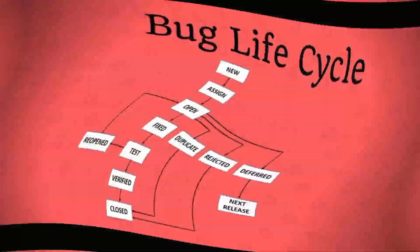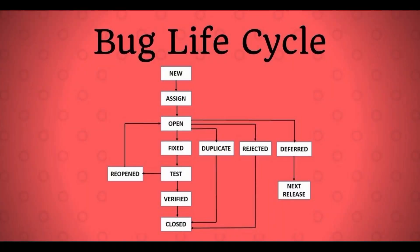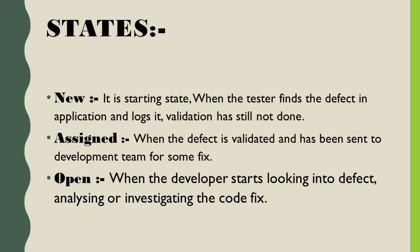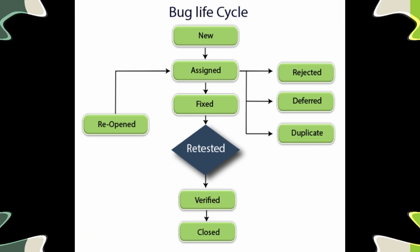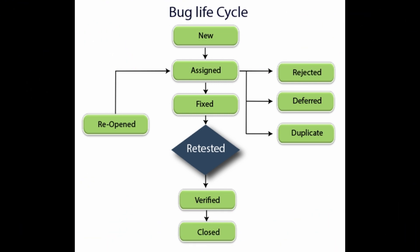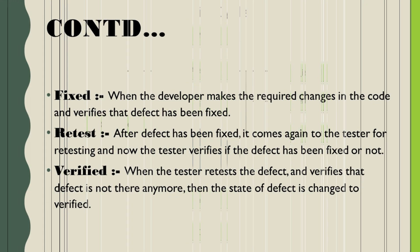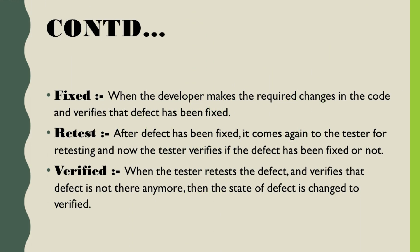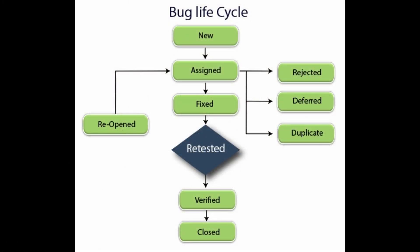Now comes the open state. This state comes after the assigned state. The state of defect is changed to open when the developer starts analyzing or investigating the defect for fixing it. The fourth one is the fixed state. The state of defect is changed to fixed when the developer makes the necessary changes in the code and verifies whether the defect has been fixed correctly.